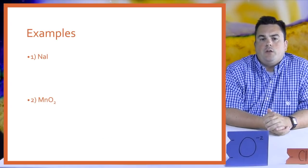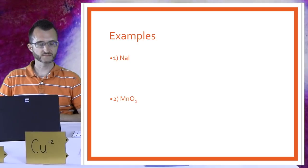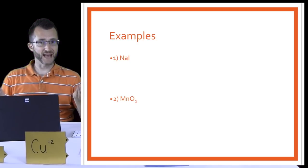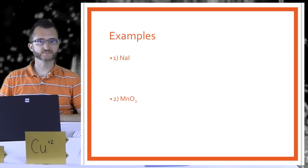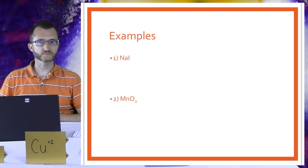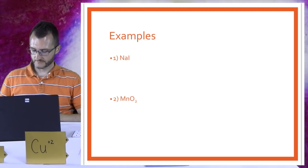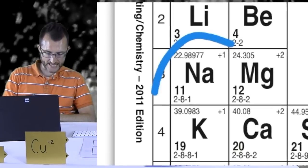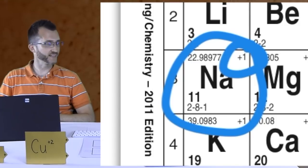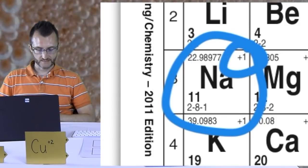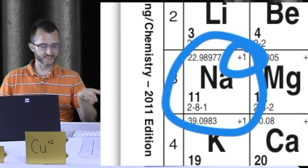Our first compound is NaI. We've got two elements — it is binary. NA is a metal and I is a nonmetal, so we have ionic bonding. We haven't talked about covalent yet; we will get to those rules later on. Look up NA on your periodic table — it's sodium, and it has only a +1 charge listed. That means we don't have to specify the charge, so we don't need a Roman numeral.